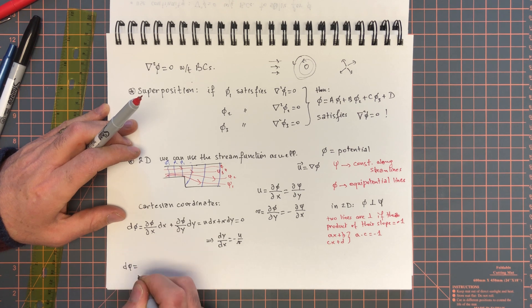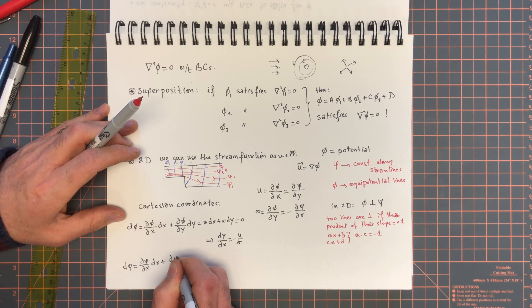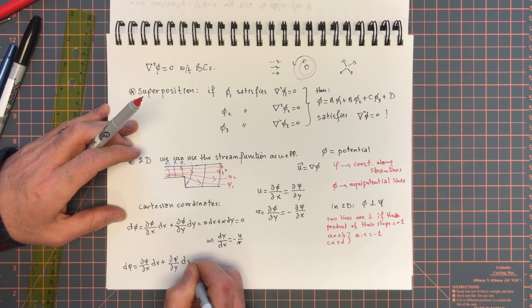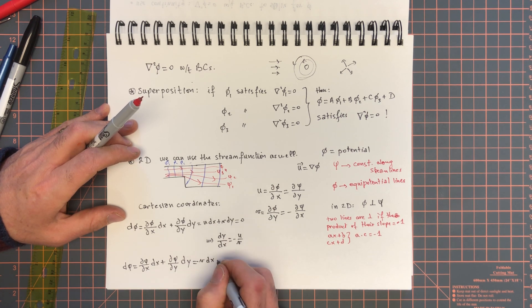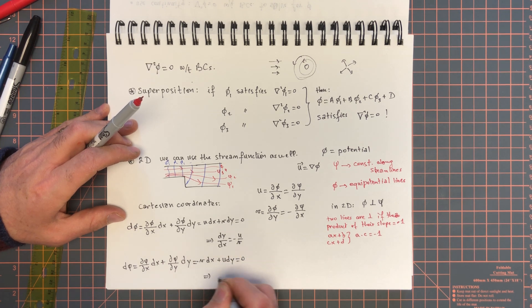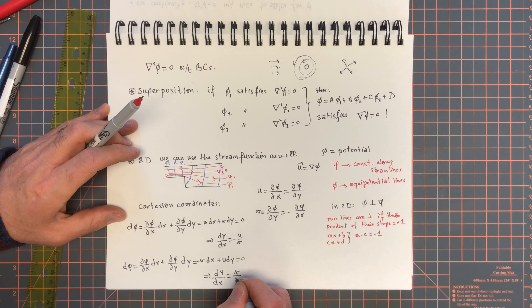And d psi, which is equal to zero along a streamline, that's equal to d psi by dx dx plus d psi by dy dy. And that's equal to minus v dx plus u dy, that's equal to zero. So, this implies, for the stream function, dy by dx is equal to v over u.